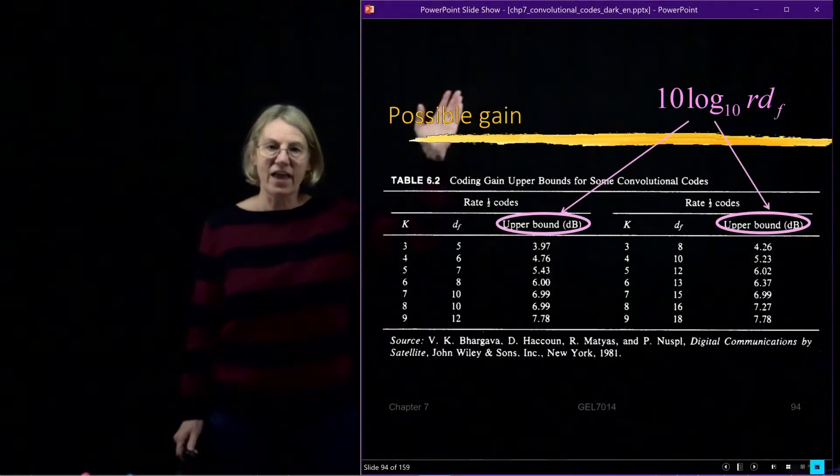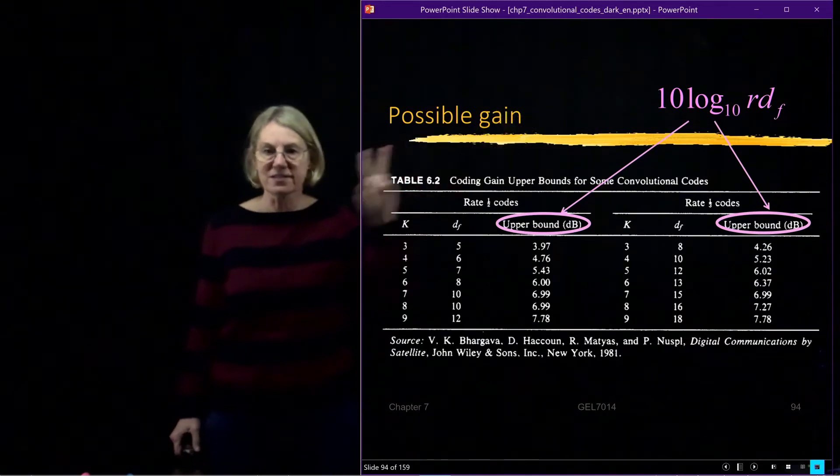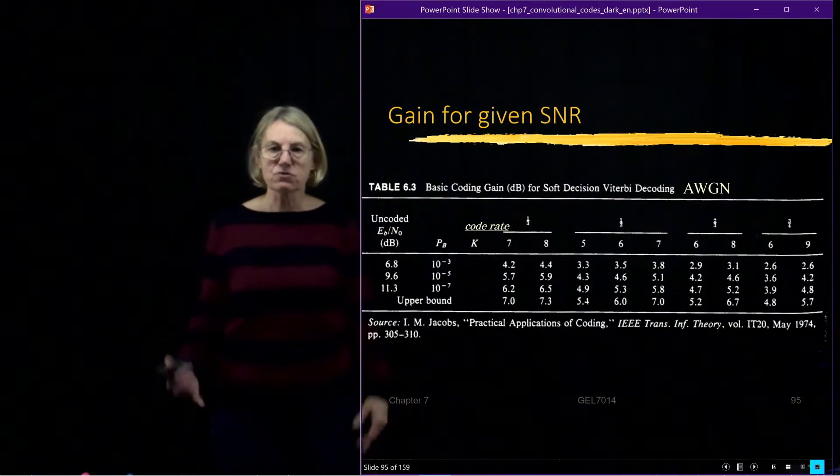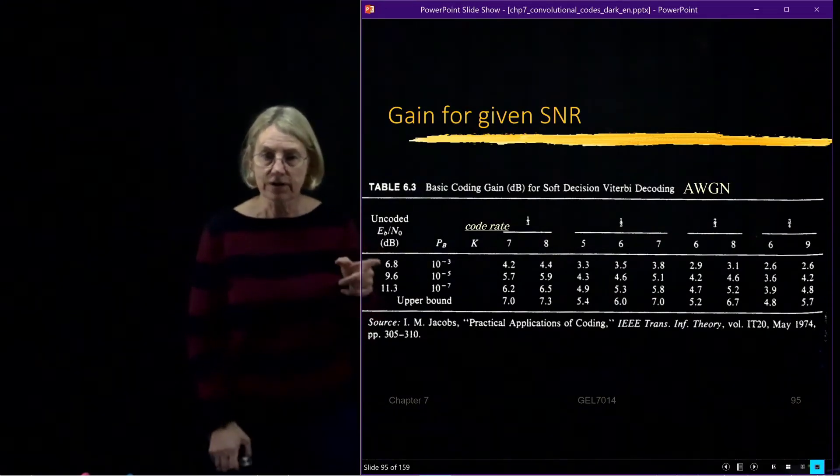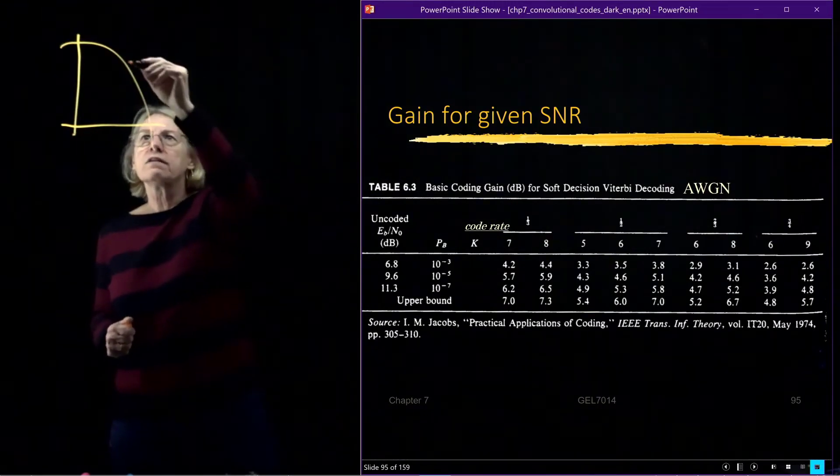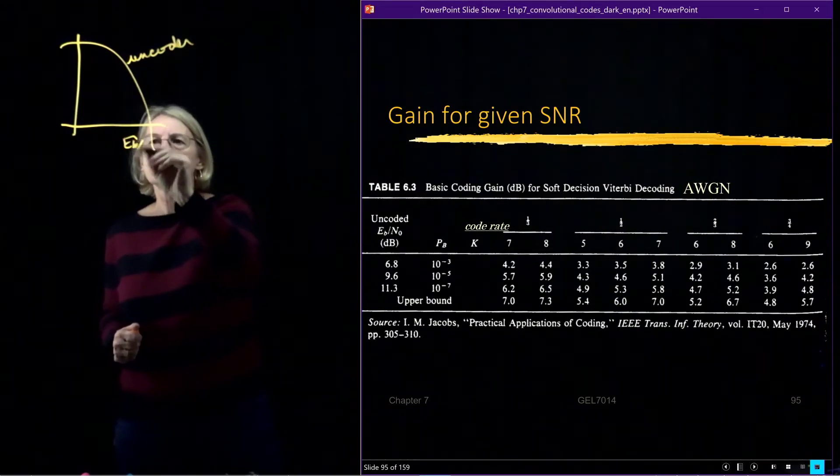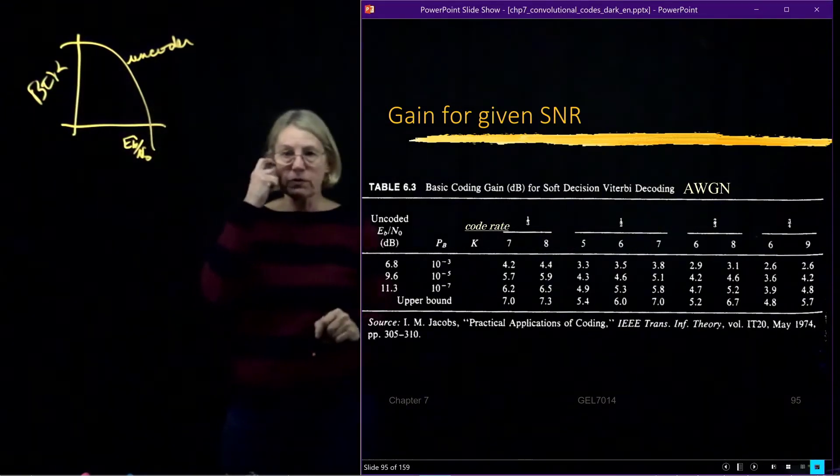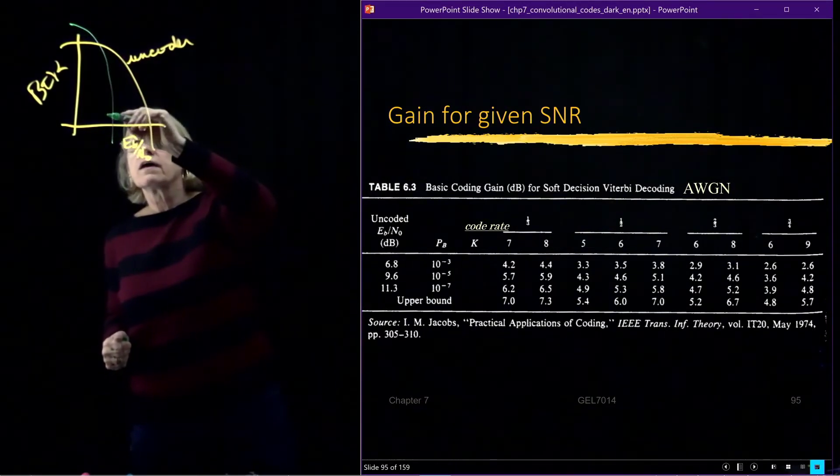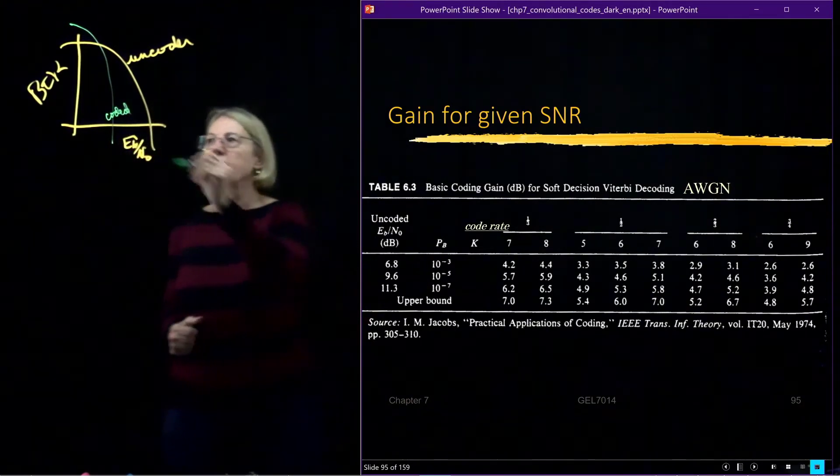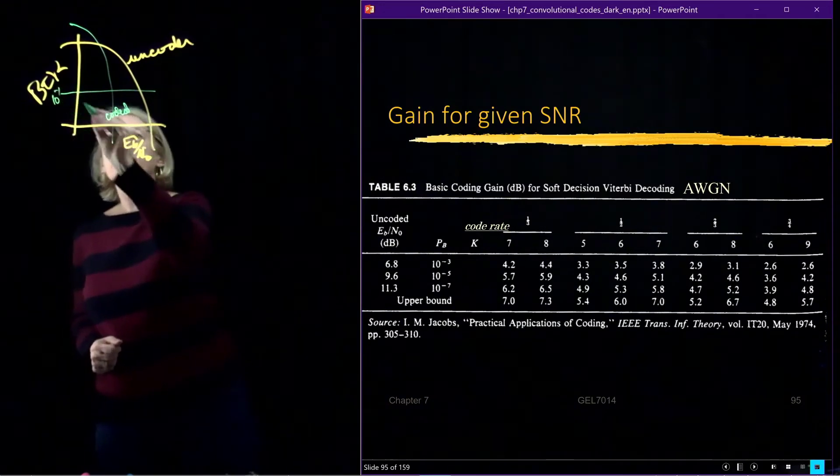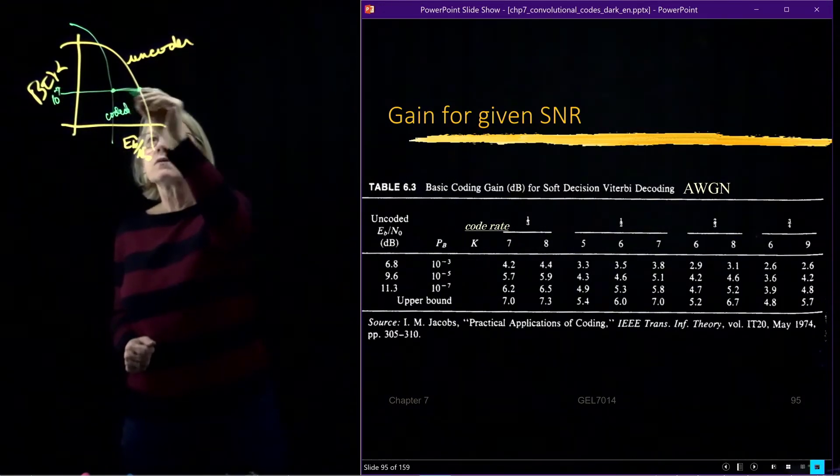So on the previous slide, we saw an upper bound on the performance of a code based simply on two characteristics, the constraint length and the free distance and, of course, the rate of the code. Now, suppose that we weren't interested in an upper bound, but we wanted to find actually the given gain for a certain bit error rate. So what we would do in that case is we would plot the uncoded bit error rate, and then we would plot for a given code what was the coded bit error rate.